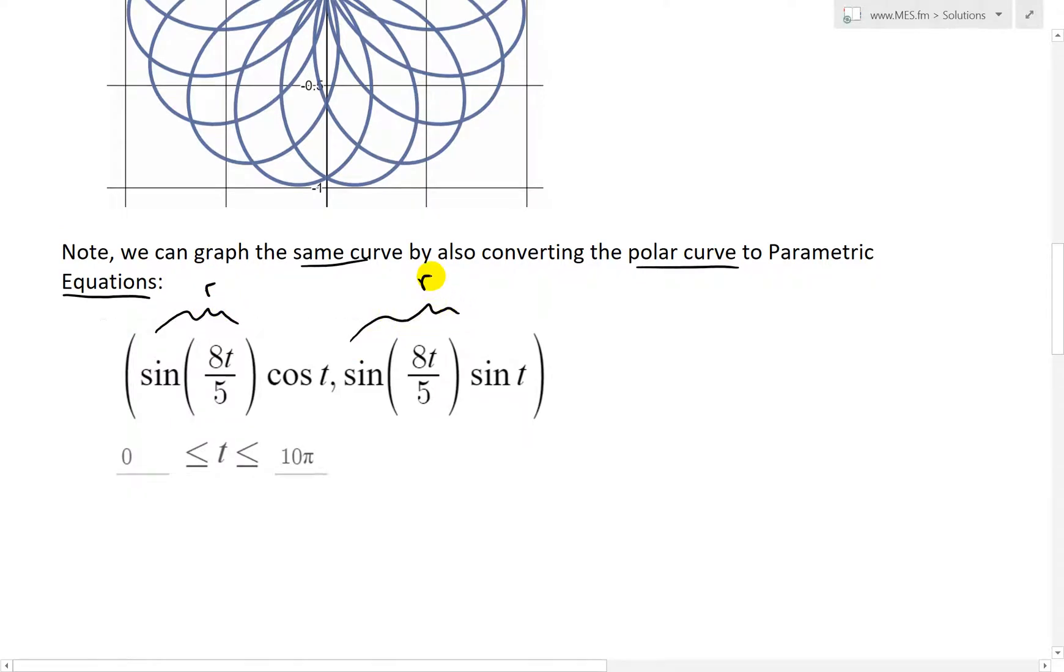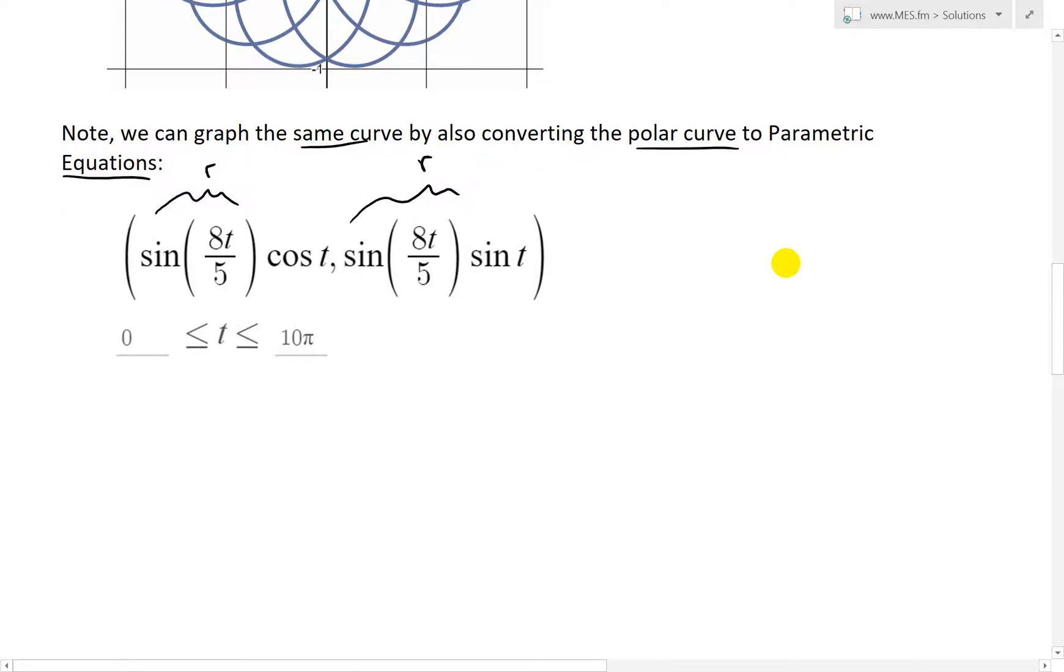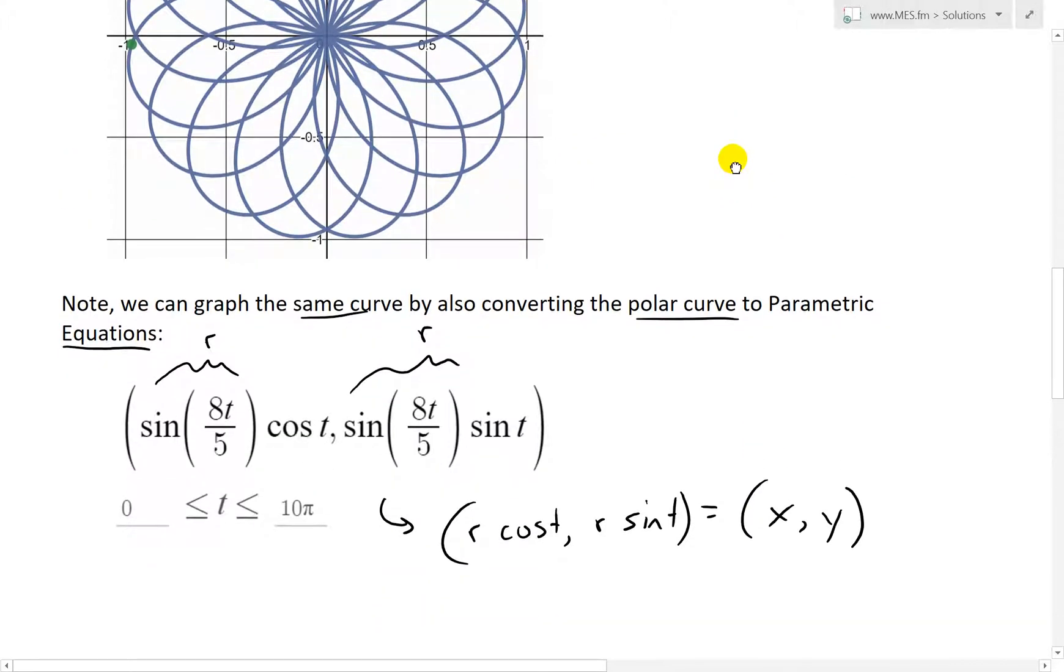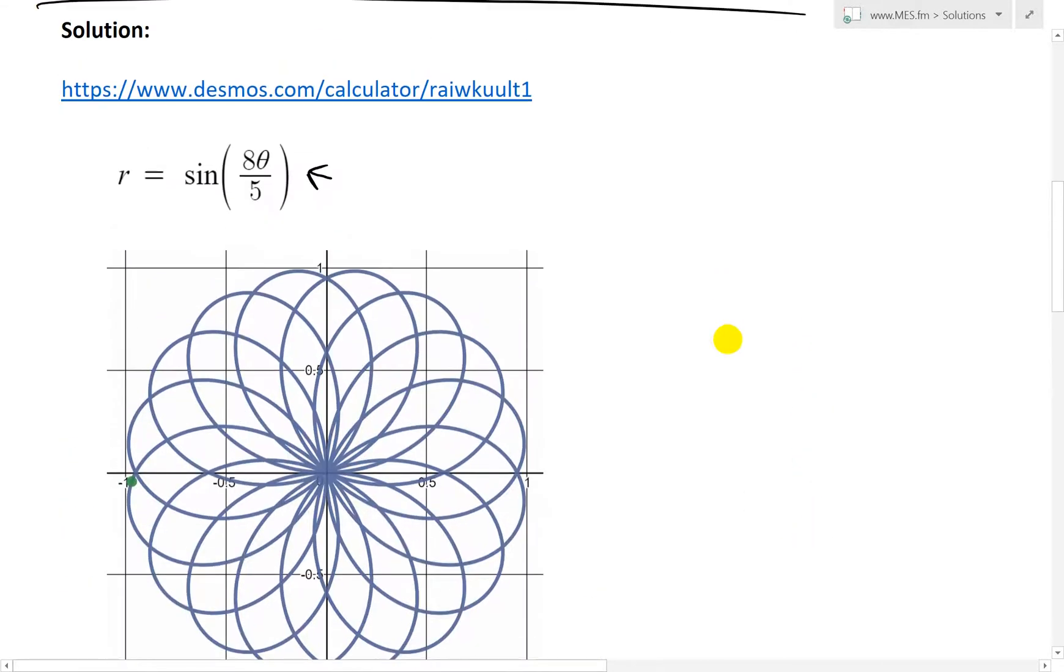We can basically graph the same curve by converting the polar curve to parametric equations. Again, as I've covered in my earlier videos, where this is just r. And yes, as you can see, this is r, r cos T. This is r sin T. And this corresponds to the x and y coordinates. But with parametric equations, you can't use theta. You have to use T. So T is basically the same thing as theta in this case.